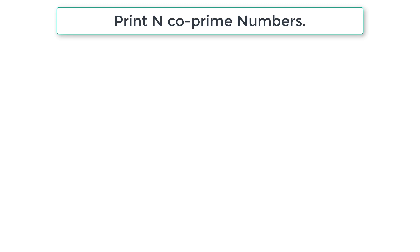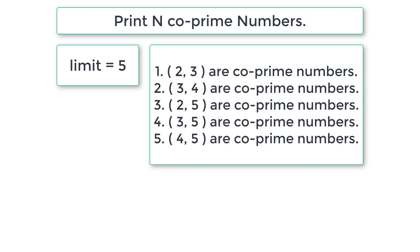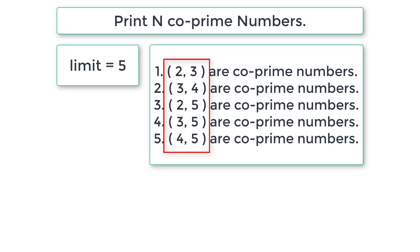Let's write a C program to print N co-prime numbers. Instead of N, I'll call it 'limit' - that makes more sense. If the user enters 5 for limit, our program must output 5 co-prime numbers. You can see the result on your computer screen right now: 2,3 then 3,4 then 2,5 then 3,5 then 4,5 - these are the co-prime numbers.